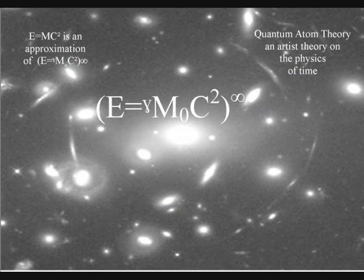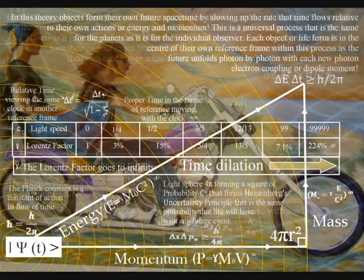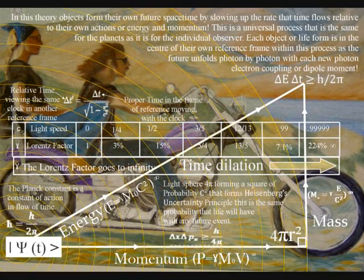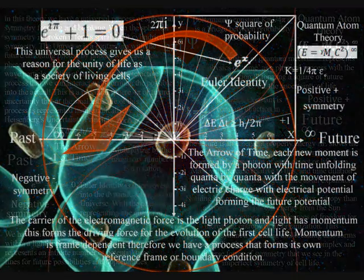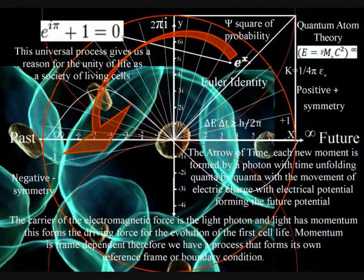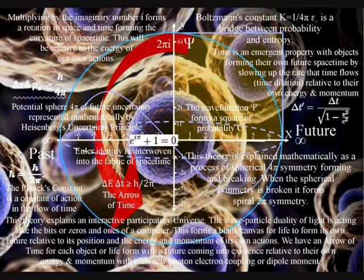The infinity symbol represents the whole universe as an infinite number of dynamic reference frames that are continuously interacting, forming the uncertainty of everyday life. This dynamic process of spherical symmetry forming and breaking forms the three dimensions of space with one variable that we see and feel as the continuum of time. This geometrical process also creates the possibility and probability for ever greater symmetry formation. It is the momentum of this dynamic geometry that forms the driving force for the diversity of cell life. Therefore we have a physical process that forms a mathematical base for Darwin's theory of evolution.